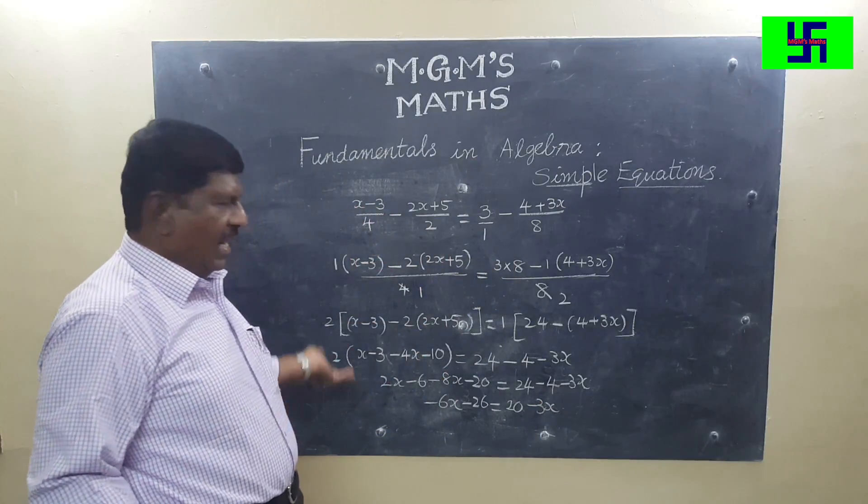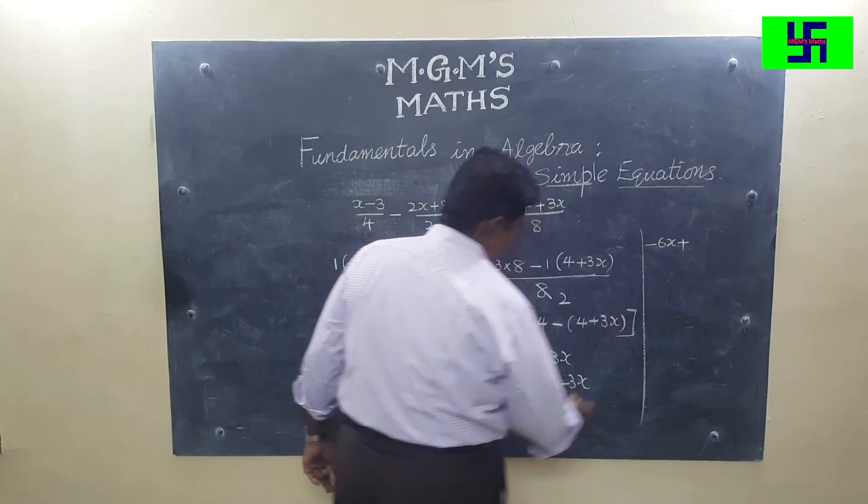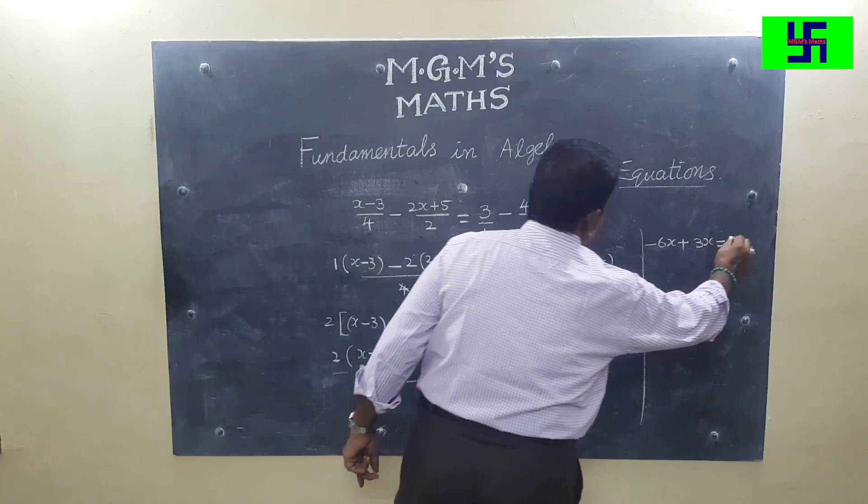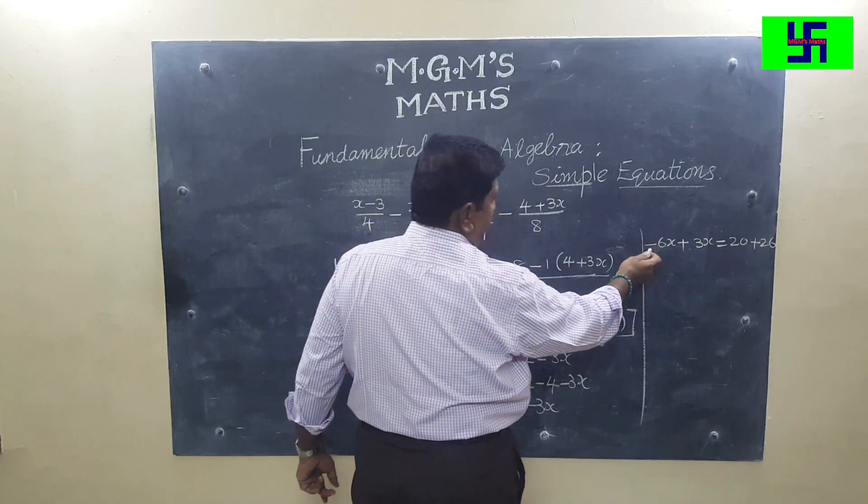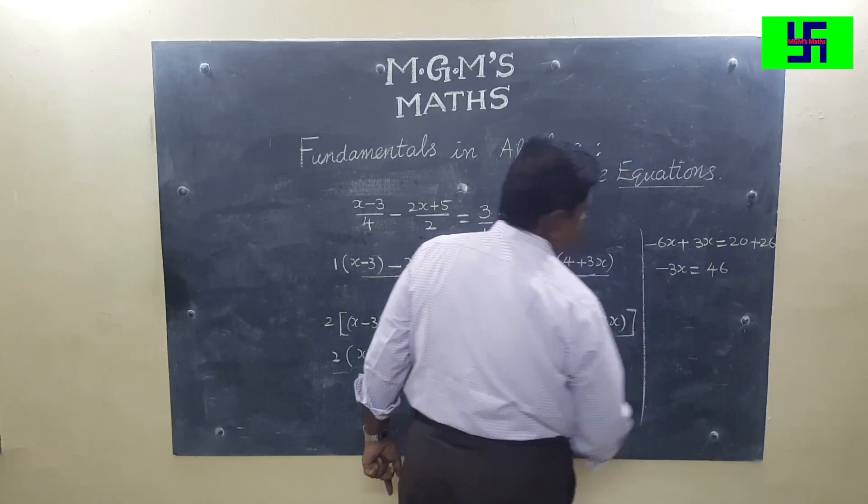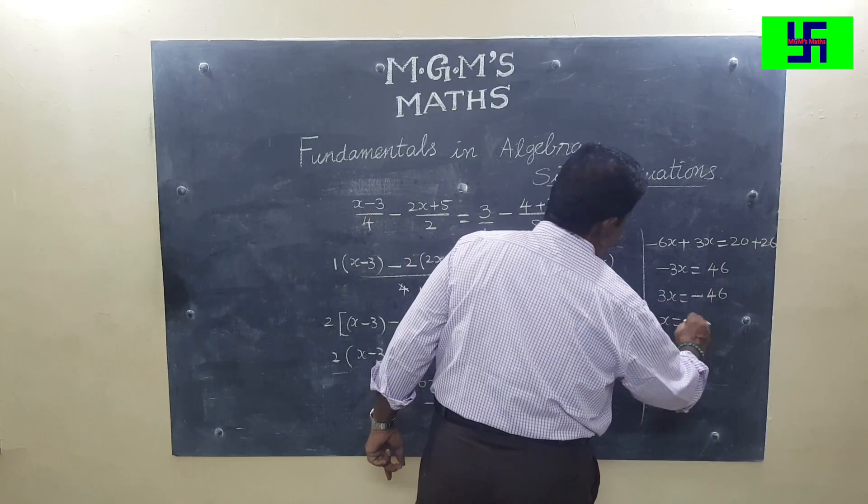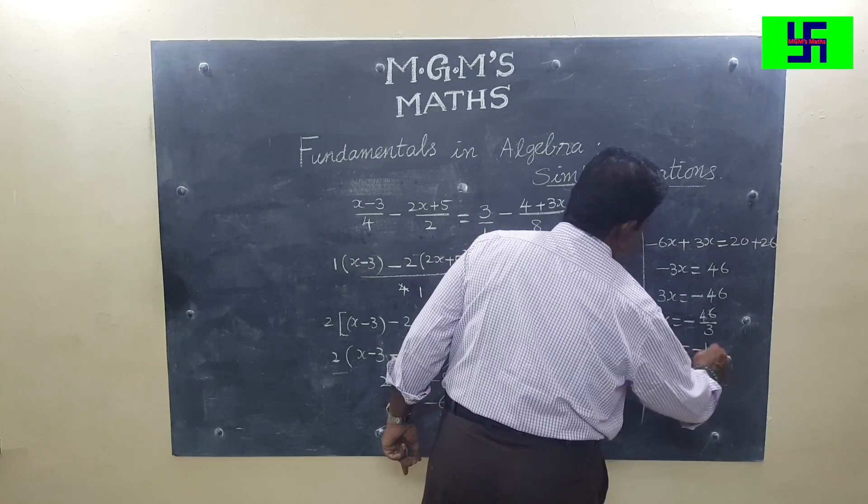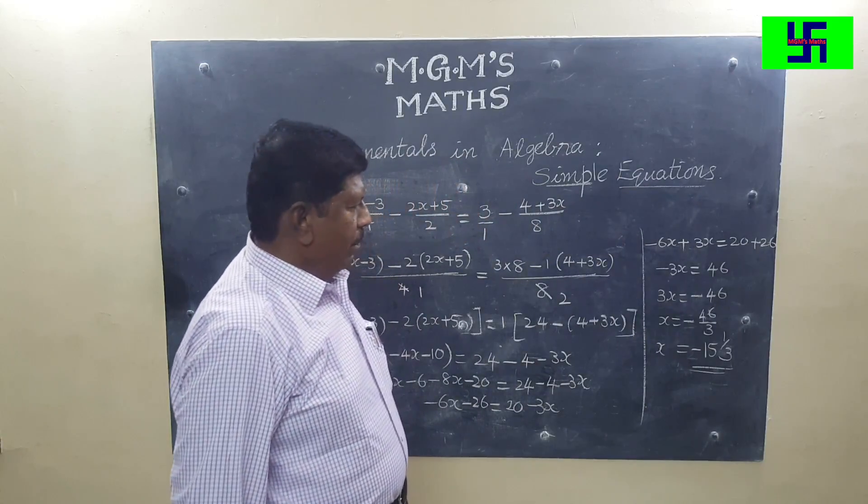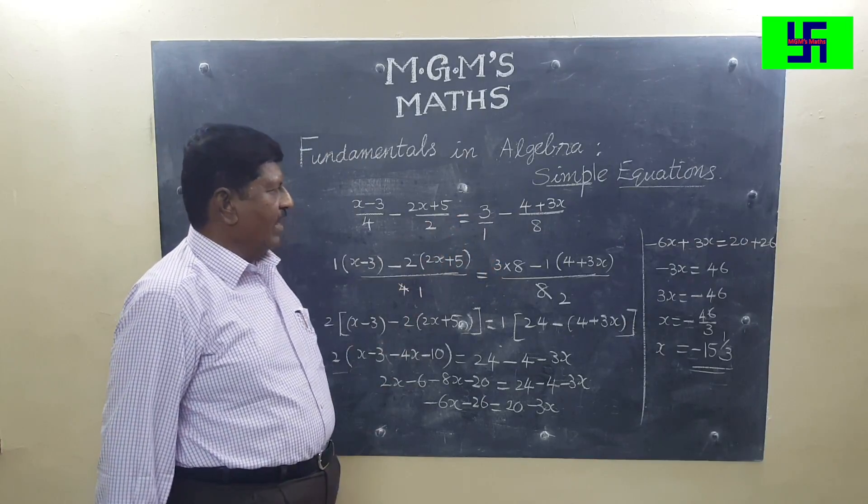Now bring x's to one side and numbers to the other side, simple as we did before. Minus 6x, if 3x is taken to the left side, plus 3x is equal to 20 plus 26. Minus 6x plus 3x, different signs, subtract: minus 3x. 20 plus 26 is 46. So multiply both sides by minus. You get 3x is equal to minus 46. x is equal to minus 46 by 3, which equals minus 15 and 1 by 3.